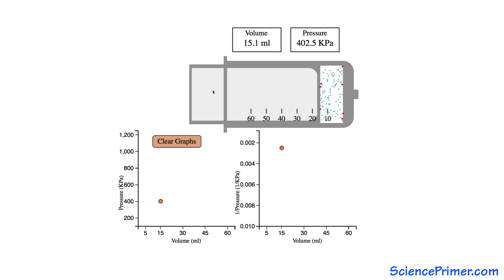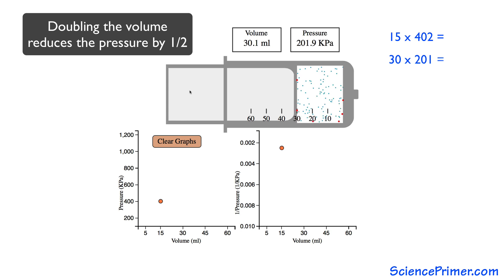This is a linear relationship. If the volume of the gas doubles, its pressure will decrease by one-half. If the volume doubles again, the pressure will go down by half again.